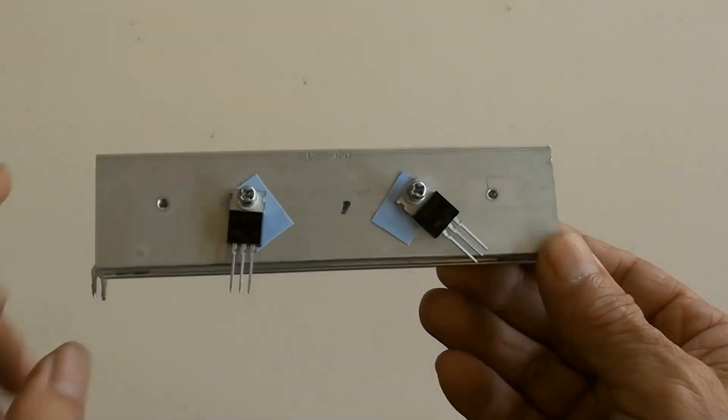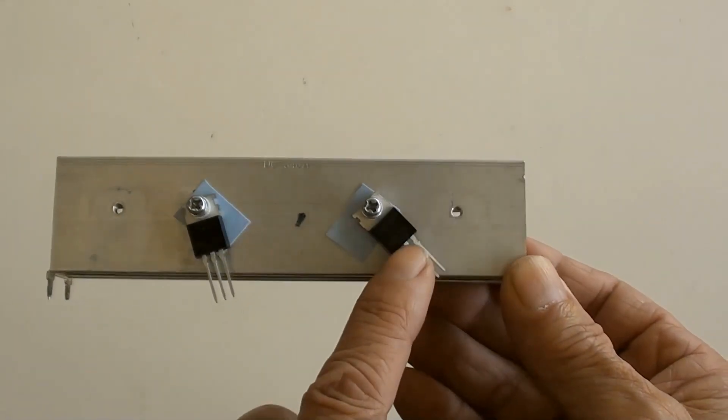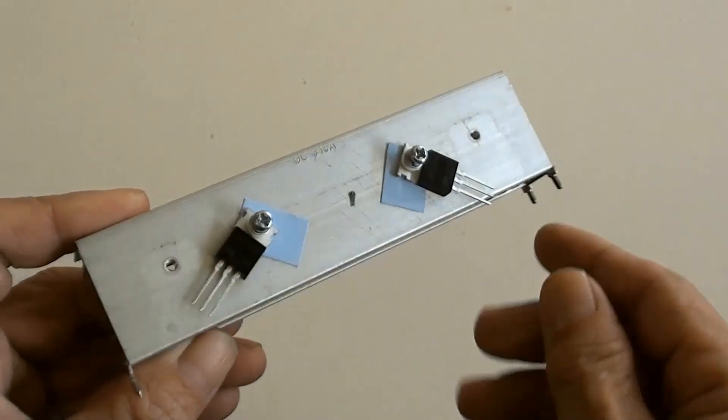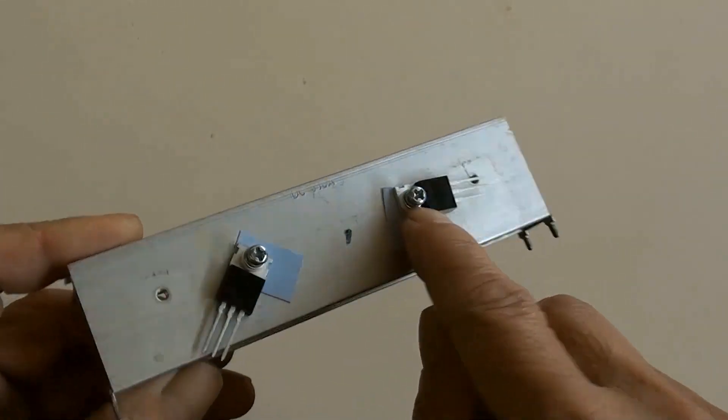These are two MOSFETs of IRFZ44N with a heatsink attached. Make sure to install insulation pads here and screw sleeves there.